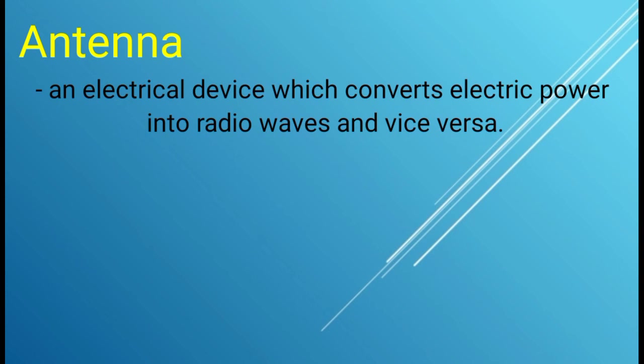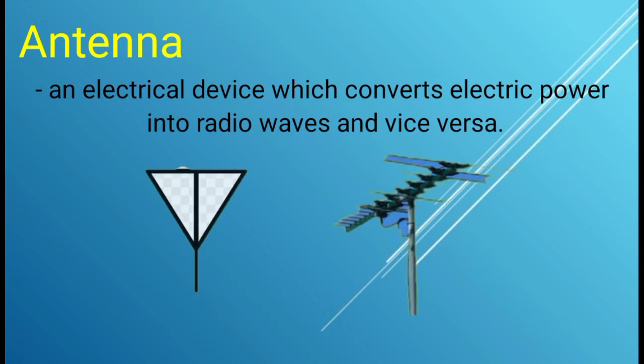Next is the antenna. It is an electrical device which converts electric power into radio waves and vice versa. We usually use antenna to receive signals from TV and radio stations. And this is the symbol and the actual appearance or picture.